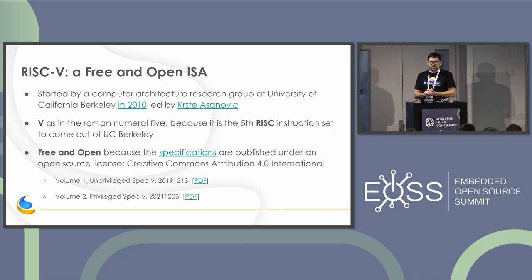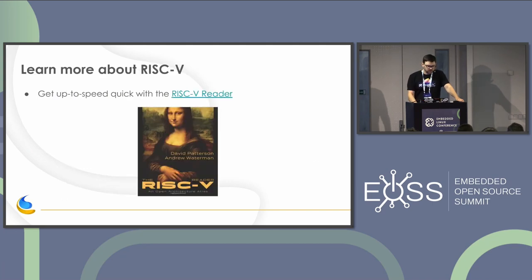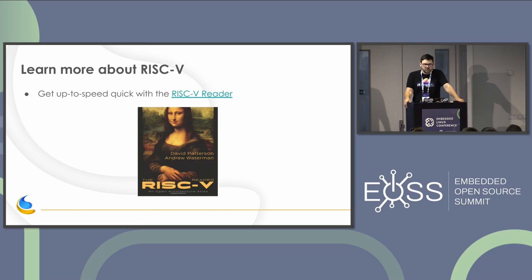RISC-V is free and open because the specifications for the instructions are published under a Creative Commons license. There are two different volumes: one for unprivileged — lower level, not running an operating system like Linux — and one for privileged, where you have machine mode and supervisor mode and you'd be running a full operating system. There's a book that's only about 100 pages that goes through RISC-V in depth — available in print and as an e-book in multiple languages.